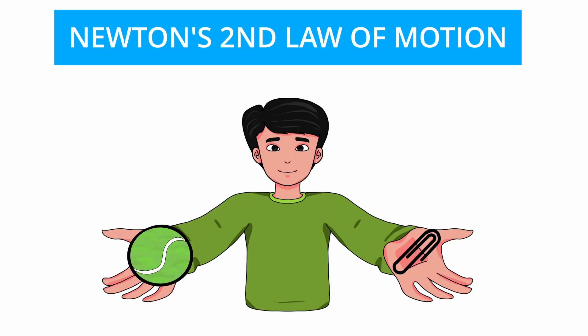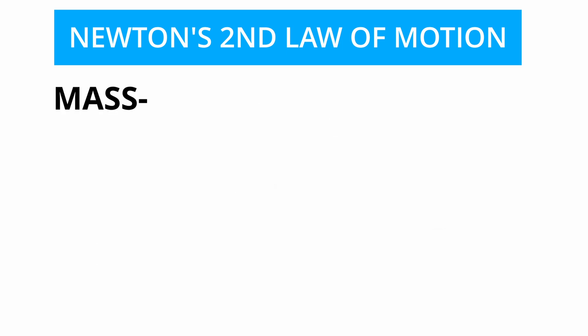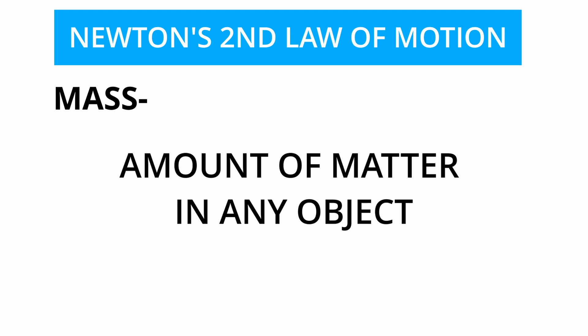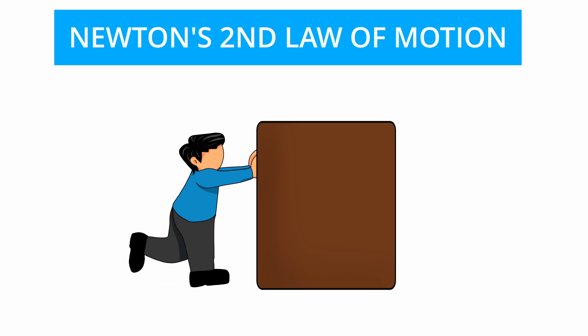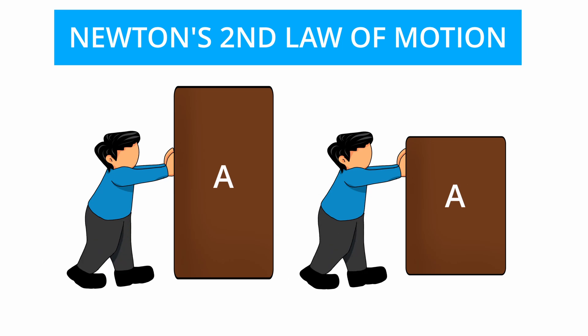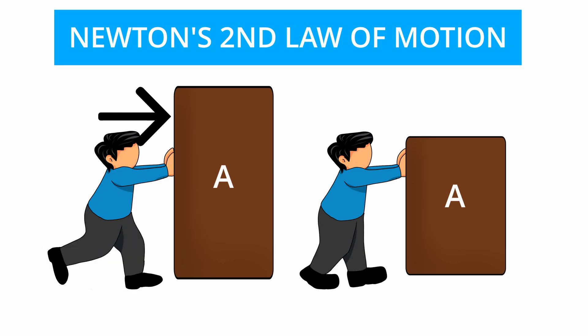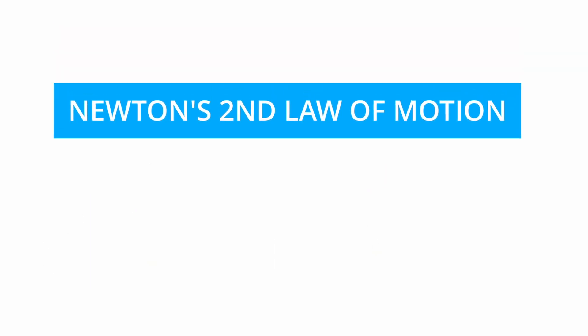If you hold a tennis ball and a paperclip, which would be heavier? That's right, the tennis ball would be heavier, because it has the higher mass. Mass can be defined as the amount of matter in any object. It will require more force to move more mass. That's why the same force applied on two objects with different mass results in different accelerations, because the same acceleration would mean more force being applied to the object with a larger mass. Hence, Newton's second law.